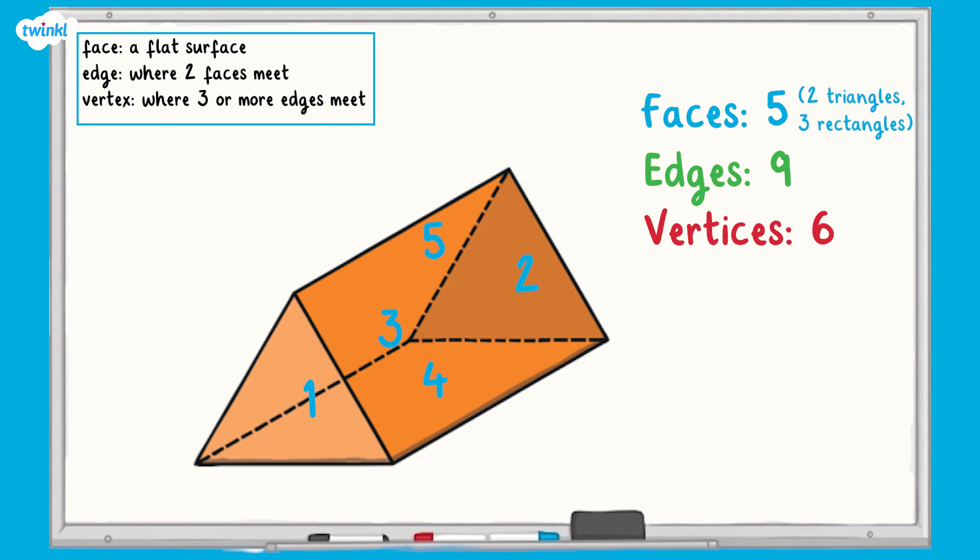We can repeat this for the edges. Again, starting with the ones that we can see each time. One, two, three, four, five, six, seven, eight, nine.